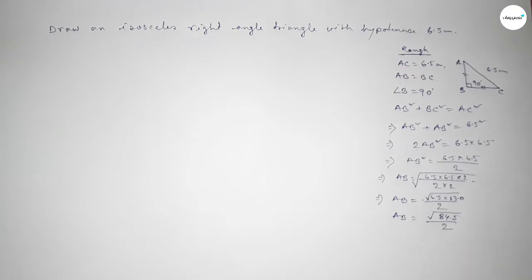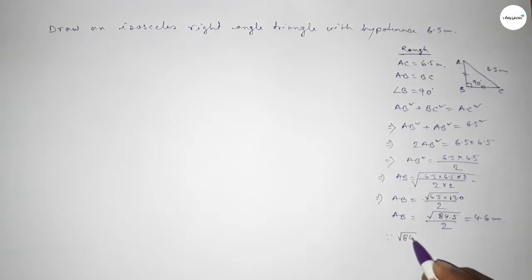So this is 84.5 over 2, so this is equal to approximately 4.6 centimeter, since the value of root 84.5 equal to 9.2 approximately.